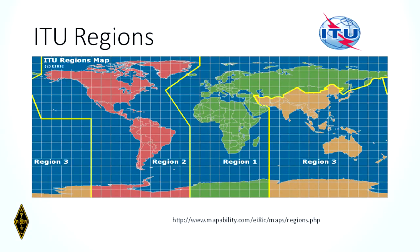Back to the ITU — the International Governing Body of Civilian Radio Communications. The ITU has divided the world up into three zones. Since they're in Europe, Europe is in Zone 1. We in North America, South America, and Central America are in Zone 2. Zone 3 is the Pacific region and Asia. So: Zone 1, Europe; Zone 2, North America; Zone 3, Asia.